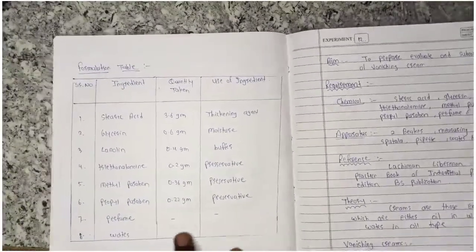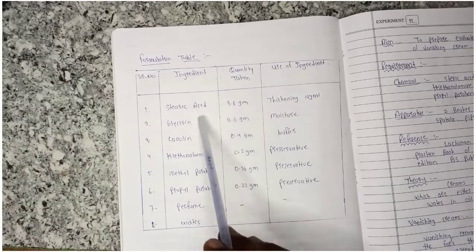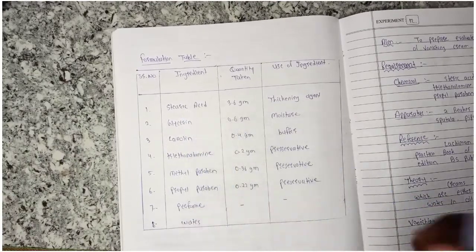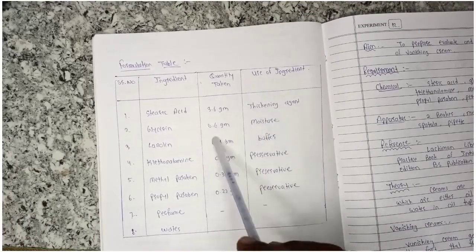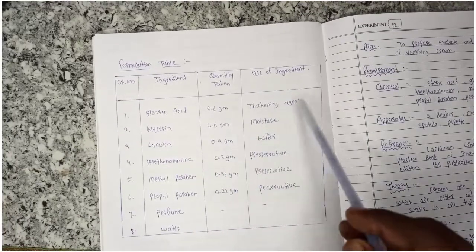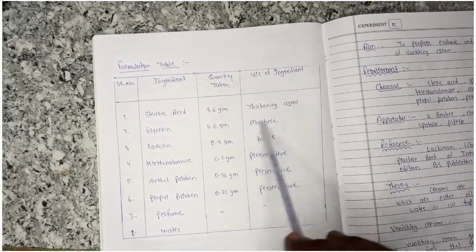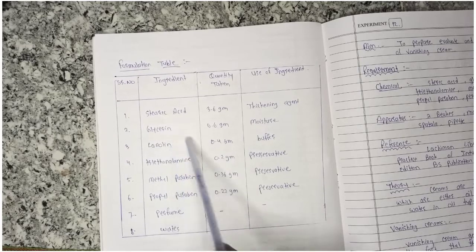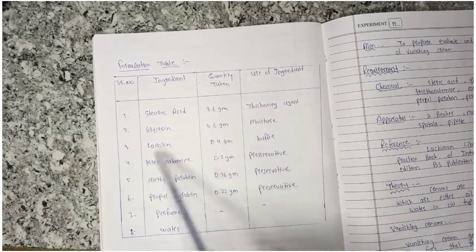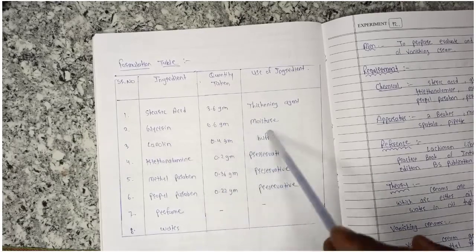We will see the chemicals in this formula table. First, steric acid - we use 0.6 gram as a thickening agent. Then glycerin as a moisturizer. Then lanolin, 0.4 gram, as a buffer.